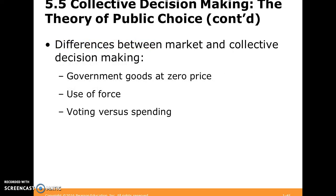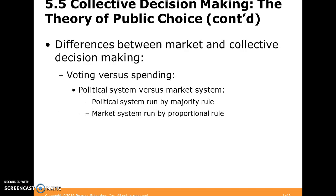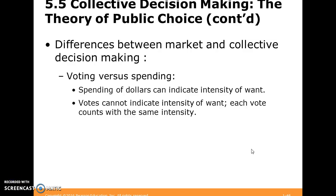There are some differences between the public sector and the market. Government can provide goods at zero prices and can use force, and decisions happen by voting versus spending. The issue with voting versus spending is that voting can happen by majority rule, while market systems are largely by proportion. Spending can indicate what you want and the intensity of your preference, but voting really can't. If A wins a vote over B, all you know is that A won — you don't know by how much. In a market activity, you can find that.